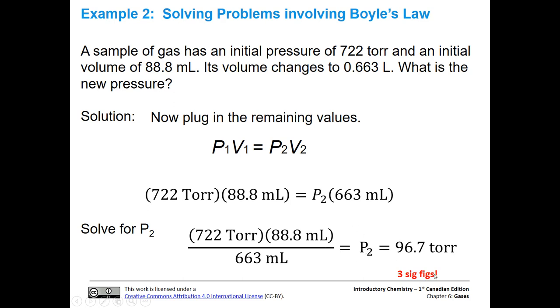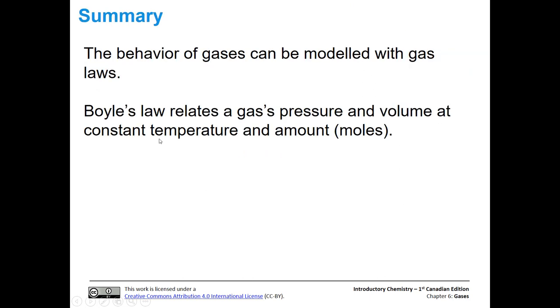And again, we have three significant figures. So we end up with 96.7 torr. So we automatically get torr, because we started off with torr. And so P1 was torr, so we end up with P2 in torr. Now again, just note these sig figs, notice that they're all three sig figs in our initial values.